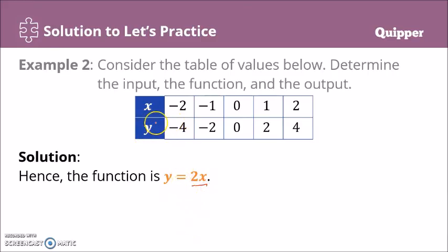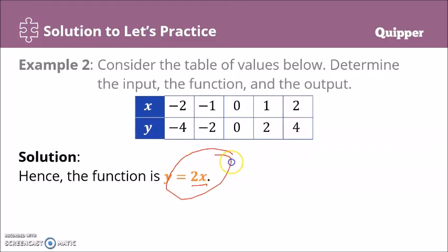That means you get the value of y by multiplying 2 to the value of x: negative 2 times 2 is negative 4; negative 1 times 2 is negative 2; 0 times 2 is 0; 1 times 2 is 2; 2 times 2 is 4. Hence, the function is y equals 2x.